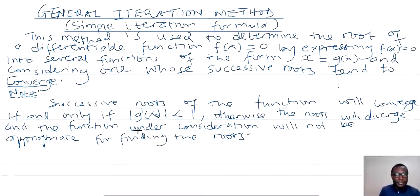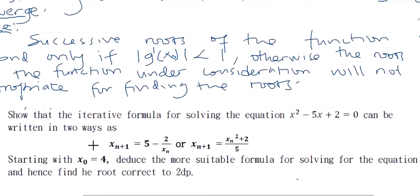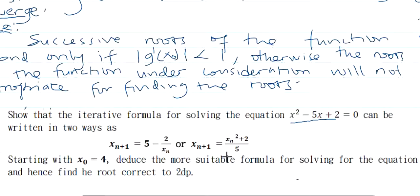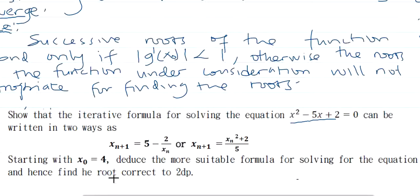Our guiding question requires us to show that the iterative formula for solving the given equation can be written in two ways, starting with x₀ = 4. We need to deduce which of the two is the more suitable formula for solving the roots, and then use it to find the root.